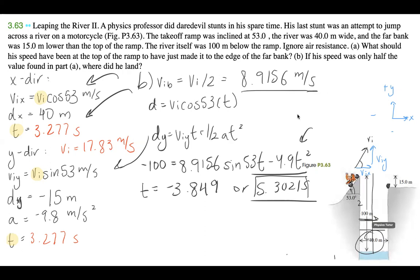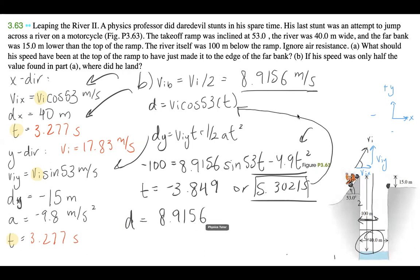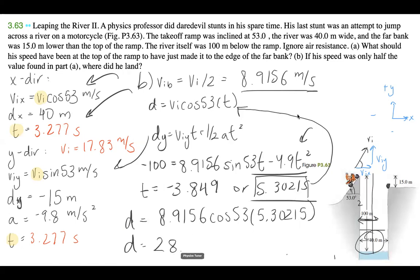Now plugging that time into the x equation: d equals 8.9156·cos53·t, giving a horizontal distance of 28.4 meters. So if his speed was only half the value from Part A, he lands 28.4 meters from his starting point in the water. That's the solution for problem 3.63. If this was helpful, please like and subscribe, and feel free to send questions via email or in the comments.